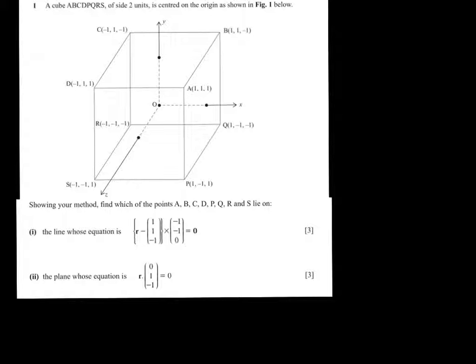So if we start by rewriting the vector equation of the line, (1, 1, -1) is the point on the line and the direction of the line is (-1, -1, 0).